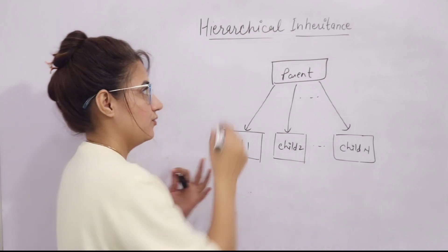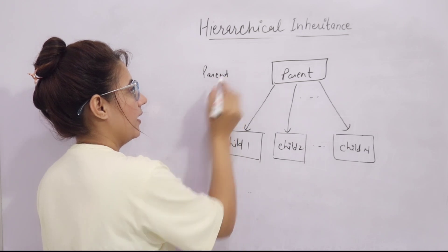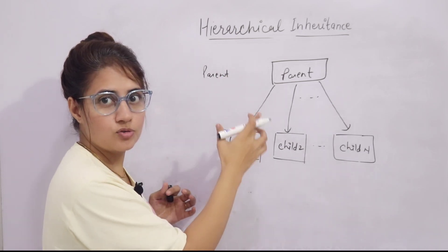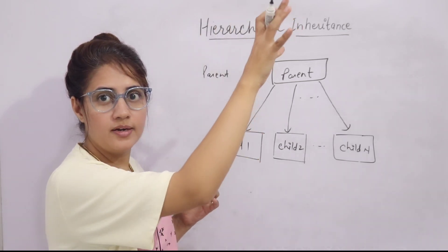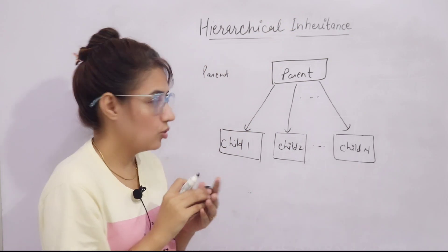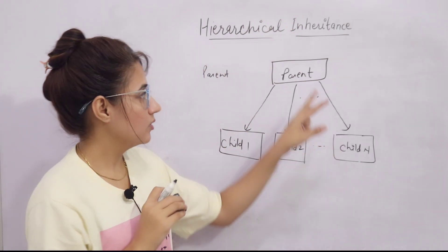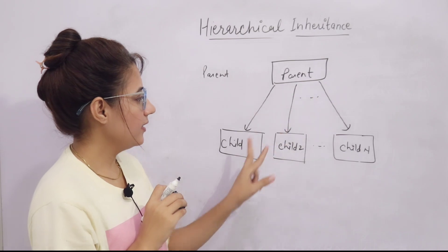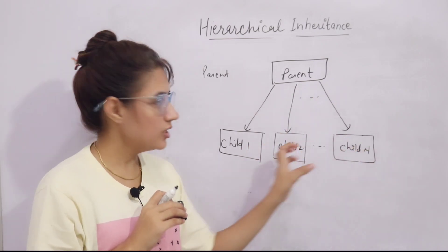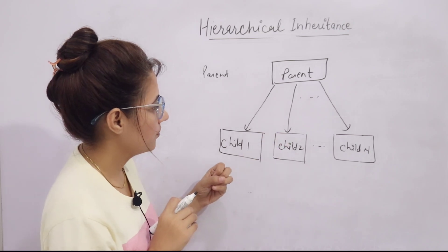Like our father or parent, and son and daughter. So from one parent to child — one parent and more than one child. It can be any number of children. This type of thing is known as hierarchical inheritance.